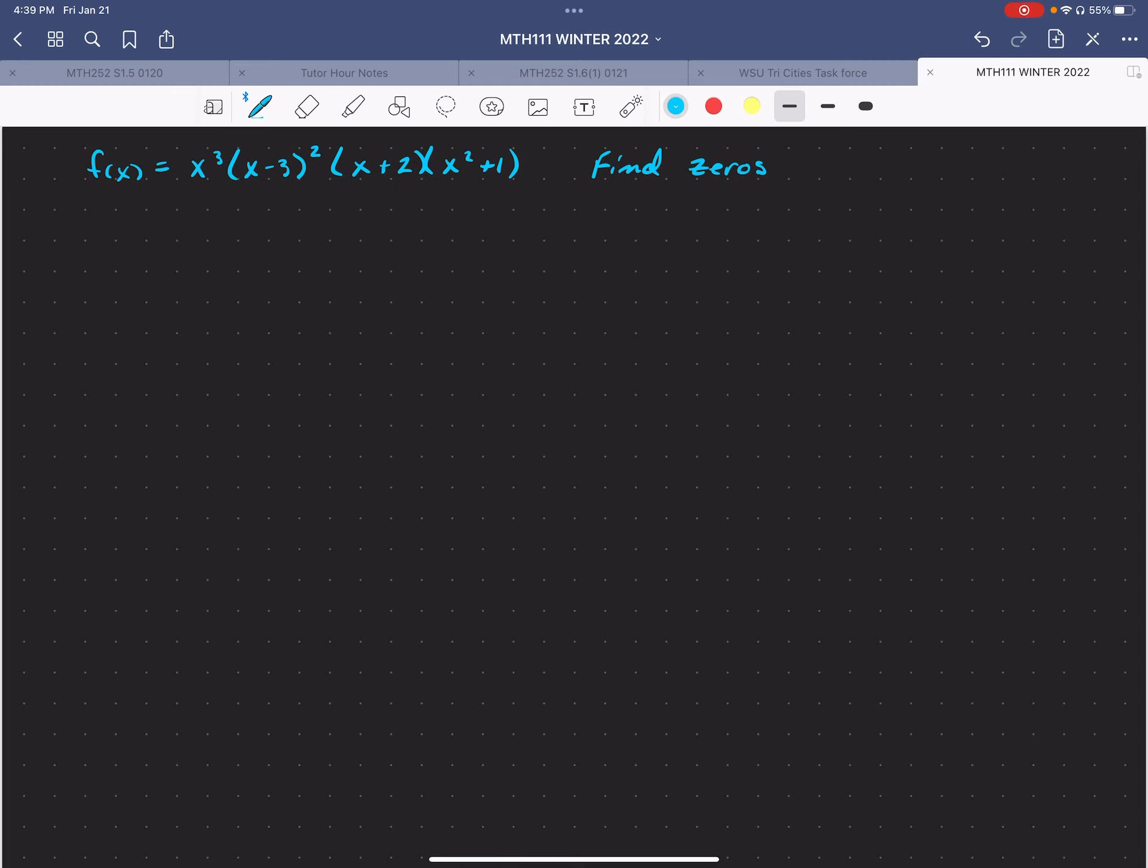So what this really means is I want to solve 0 equals x to the third times x minus 3 squared times x plus 2 times x squared plus 1, which means x to the third equals 0, or x minus 3 squared equals 0, or x plus 2 equals 0, or x squared plus 1 equals 0.